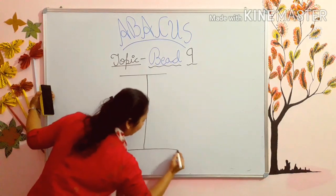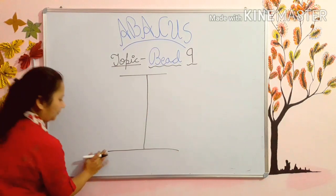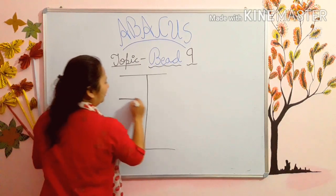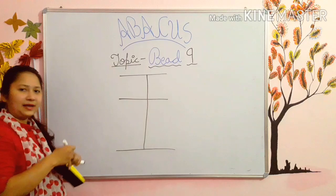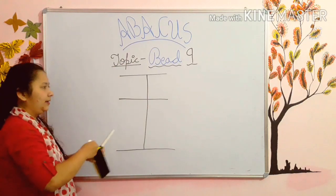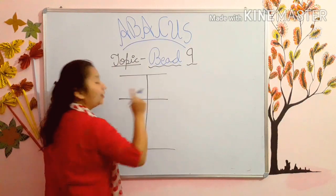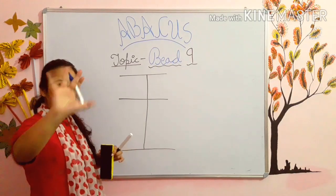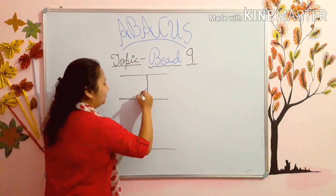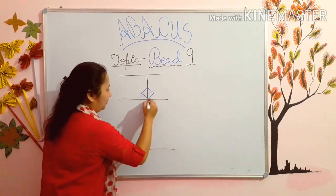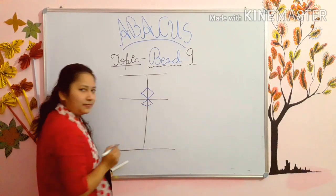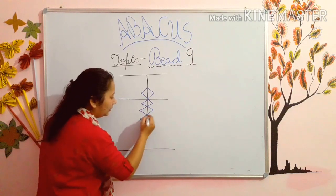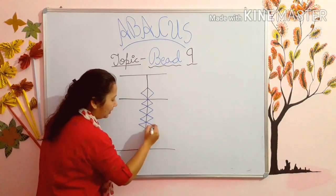First of all, as you know, what we make — like an iPhone shape, then ice cream. Then one line from between, and draw bead 9. For 9 we will take the help of 5: see 5, 6, 7, 8, and this is 9.